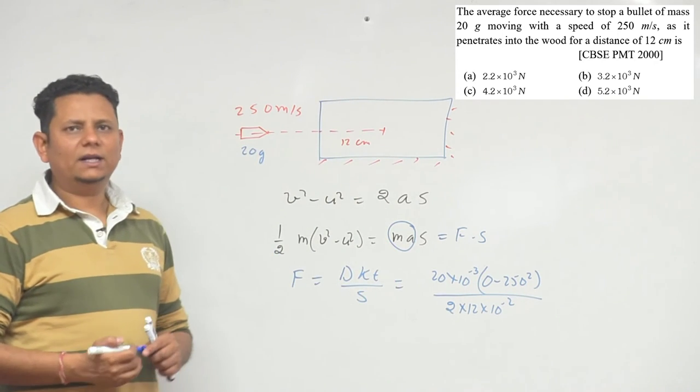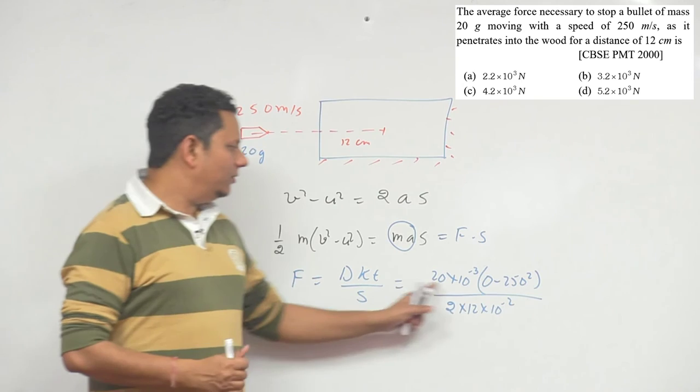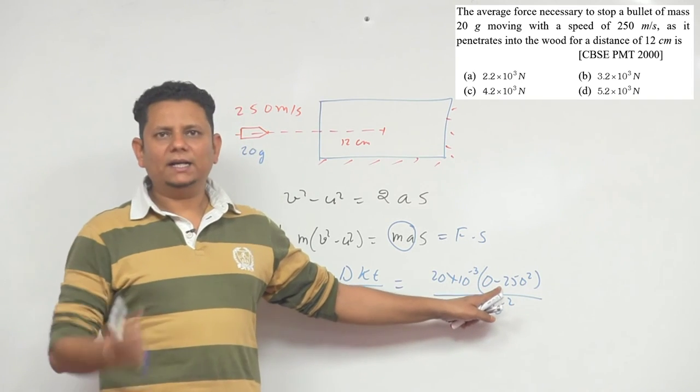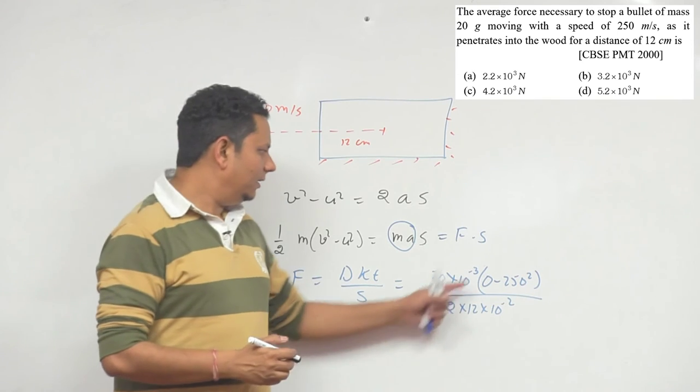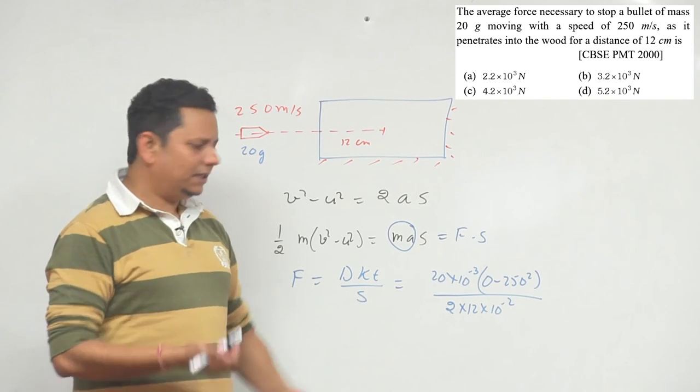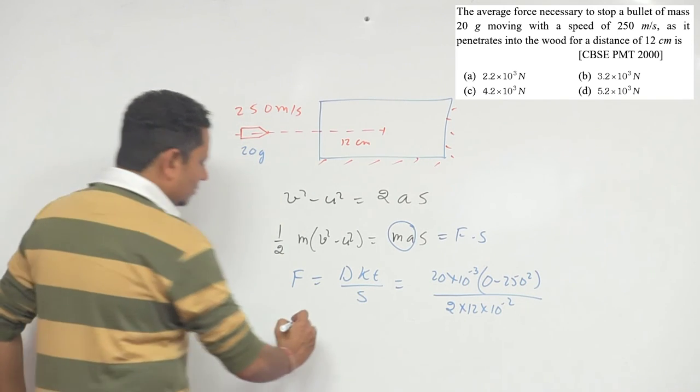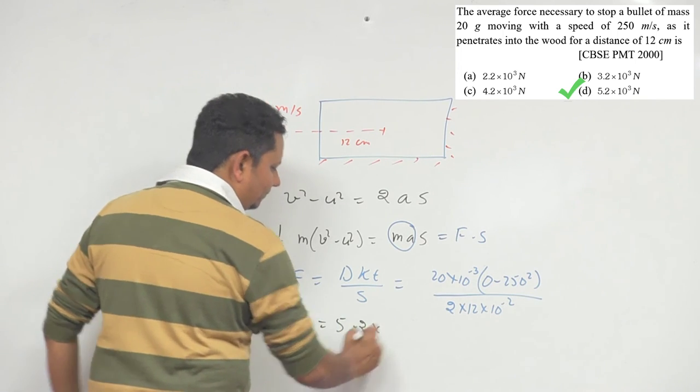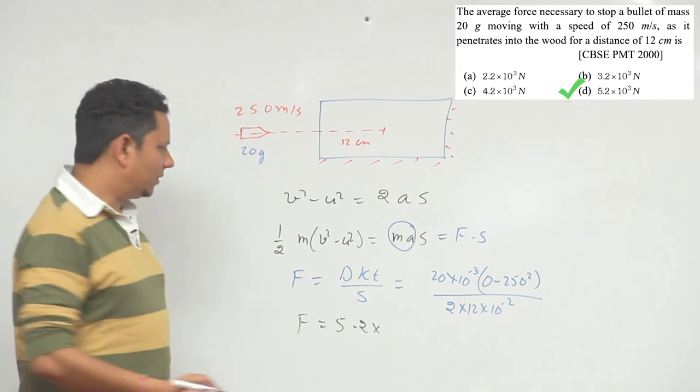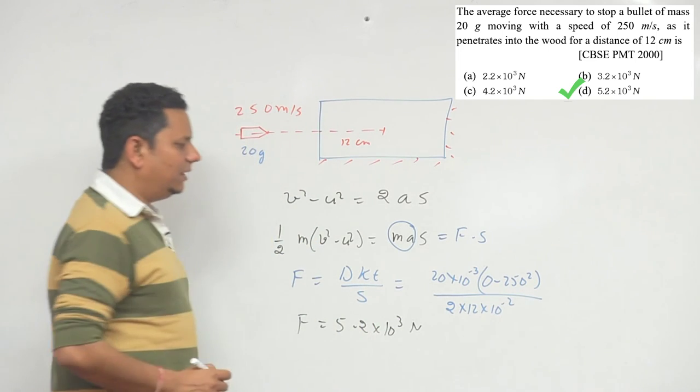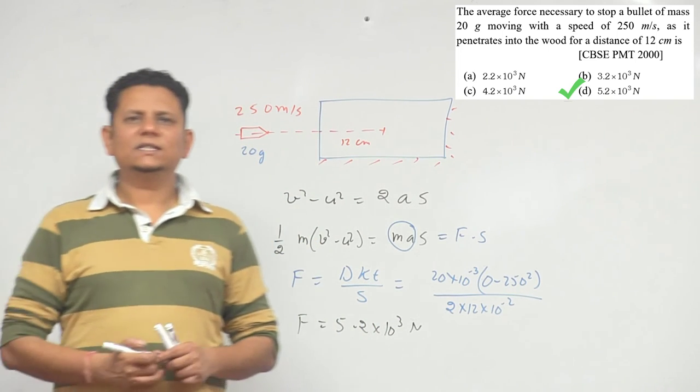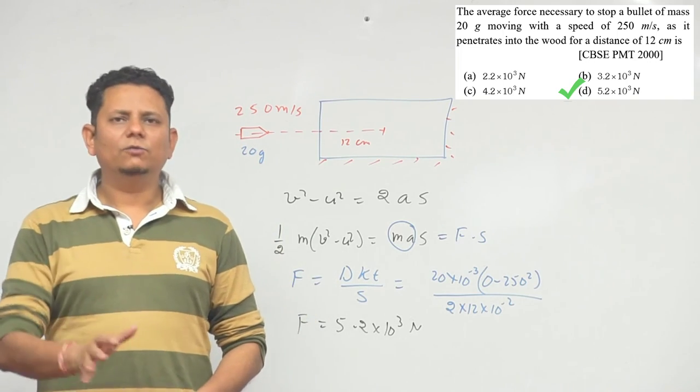Ab isko humne solve karna hai, aur humara final answer aajayega. F ki value agar notice karenge, to minus mein aa rahi hai. Minus mein aane ka matlab ye hai ki aapka retarding force hai, opposite direction mein laga hai. So all we need to do is calculate this. Isse jo hum calculate karenge, so humari F ki jo value aaegi, lagbag 5.2 into 10 to the power 3 newton. Is range mein aapna force ki value aayegi. So based on this hum keh sakte hai ki option number D would be the right answer.